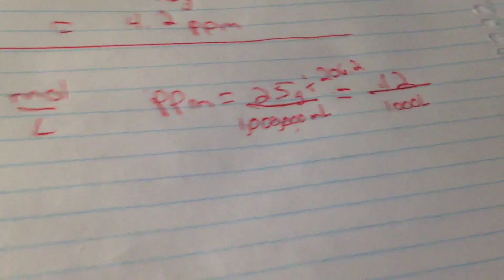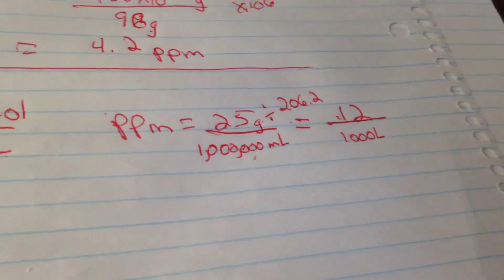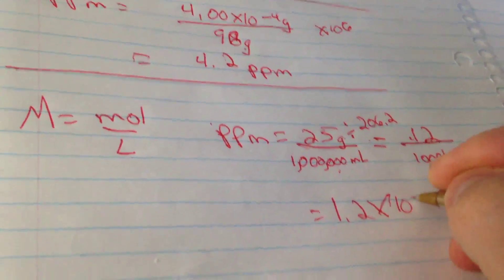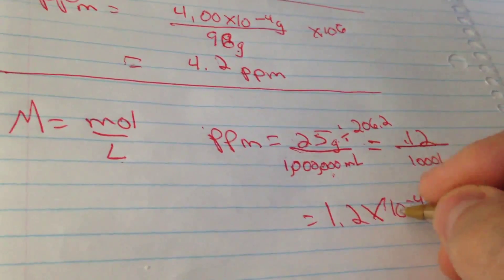so 25, oh yeah I don't have that number I think, that's just gonna give me 1.2-ish. Then if I go 1.2 divided by a thousand, that's just gonna be 1.2 times 10 to the negative 4 moles.